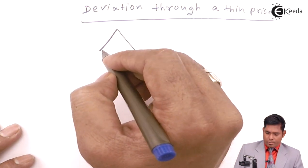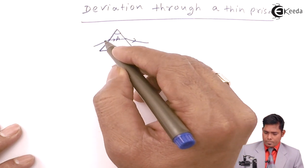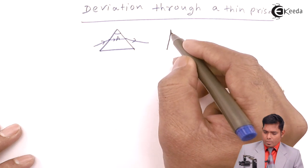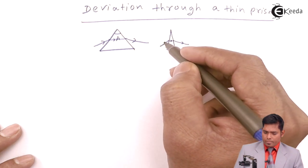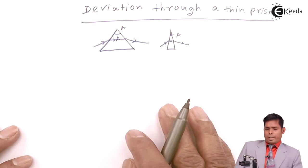Now we have a prism like this. This is the angle of prism if the ray goes like that. This is also a prism, ray goes like that. This is also the angle. This is A, this is also A. A is the angle of prism.